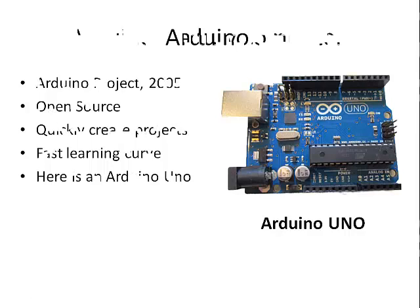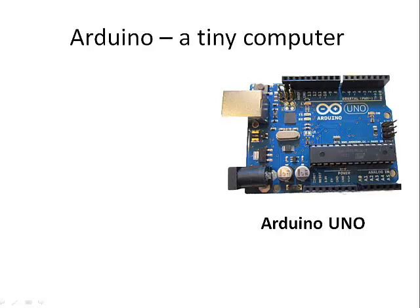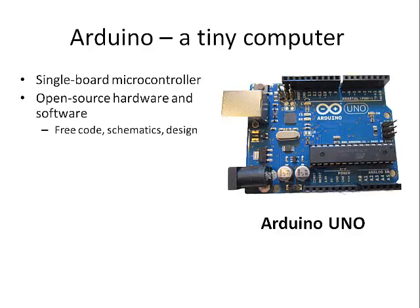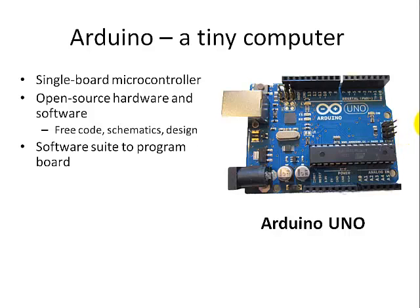This one is the Arduino Uno. It's basically a tiny computer consisting of a single-board microcontroller. It's open source hardware and software, so the free code, the schematics, the design, etc., is all open source and free for you to use and develop your own projects quickly. It has a software suite to program the board, and it's based on the Atmel AVR processor.